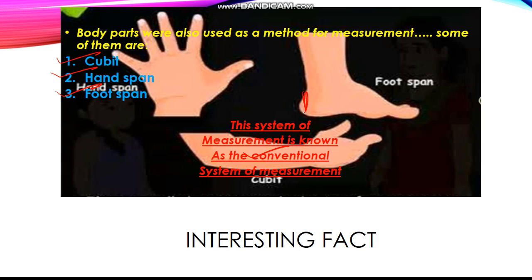The foot span is from our ankle to our toe, or you can say from the heel to our toe. The hand span is from the small finger to the thumb, and the cubit is from the elbow to the middle finger. I hope you all are clear of the conventional system of measurement.